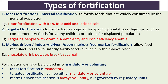The types of fortification: Mass fortification, or universal fortification, is used to fortify foods that are widely consumed by the general population. Example: flour fortification with iron and folic acid, and iodized salt. Targeted fortification is used to fortify foods designed for specific population subgroups, such as complementary foods for young children or rations for displaced populations.